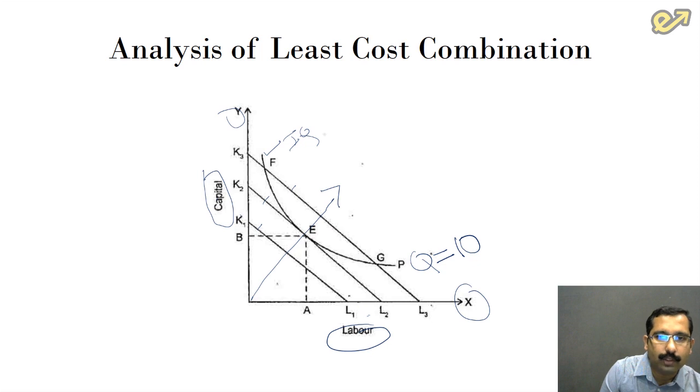Say, for example, the first cost curve's value is 10 rupees, the second is 20 rupees, and third is 30 rupees. What is the output we are obtaining here? The output that we are obtaining here is 10 units. It means that there is an intersection between the cost curve and the production curve at three important points, which is very important for us.